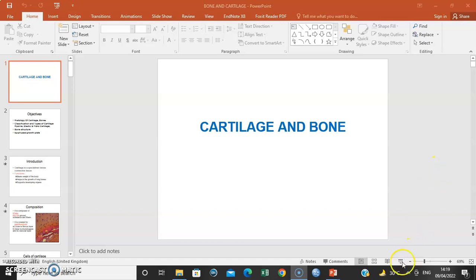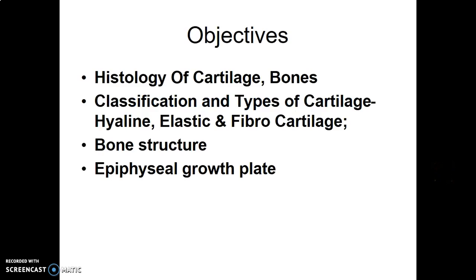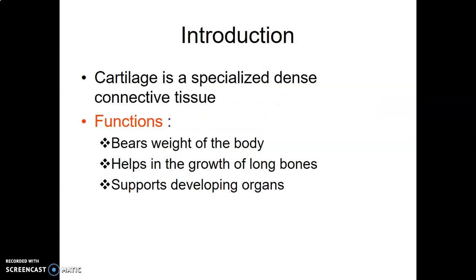Hello everyone, this is Dr. Ominde. We continue with the connective tissue series. In this video we're going to discuss connective tissue proper, where we have cartilage and bone. These are the objectives of the study: generally to look at cartilage and bone, what is the histological structure, and what is the classification.